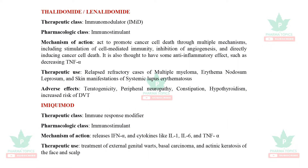The adverse effects of filgrastim include bone pain and leukocytosis. The next drug is thalidomide — its derivative is lenalidomide. Thalidomide was once banned because it was proven to be a teratogen causing phocomelia, but now, because of its beneficial properties, it is reintroduced into the market but not used in pregnant cases. It promotes cancerous cell death by stimulating the immune system. It is used to treat relapsed/refractory cases of multiple myeloma, erythema nodosum leprosum, and skin manifestations of systemic lupus erythematosus. Adverse effects include teratogenicity, peripheral neuropathy, constipation, and increased risk of deep vein thrombosis.